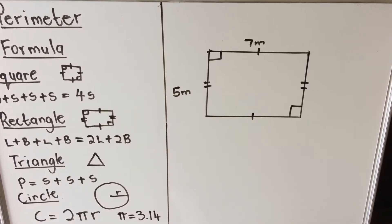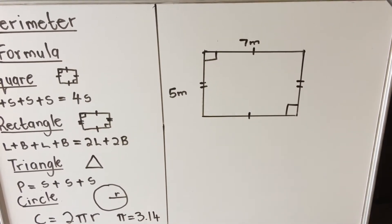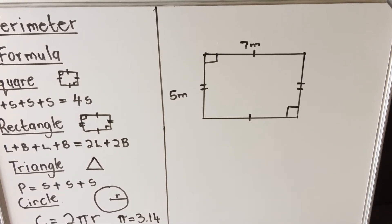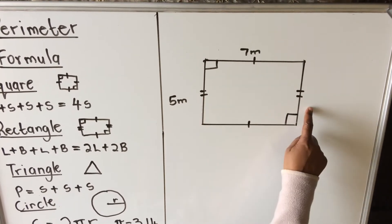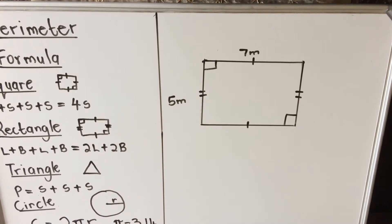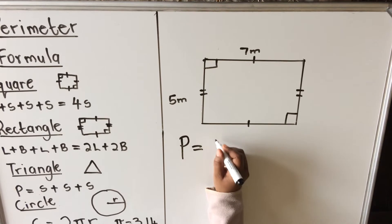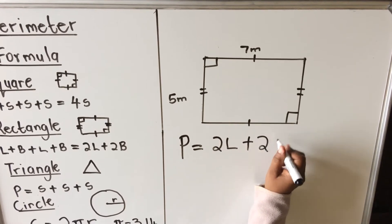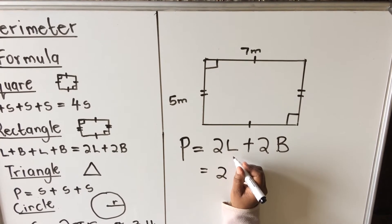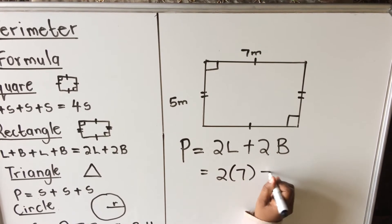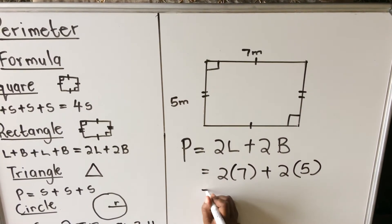Now for the first example: the shape is a rectangle because opposite sides are equal and the corners are 90 degrees. The formula for the perimeter of a rectangle is two times length plus two times breadth. My length is 7 and my breadth is 5.